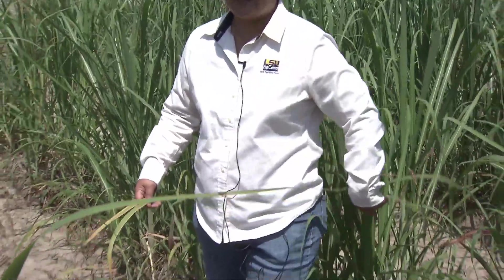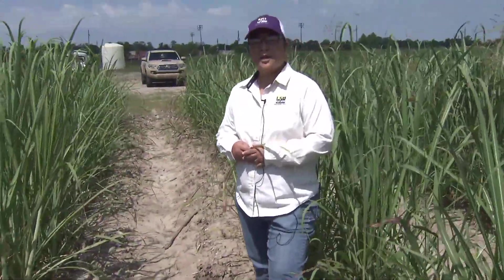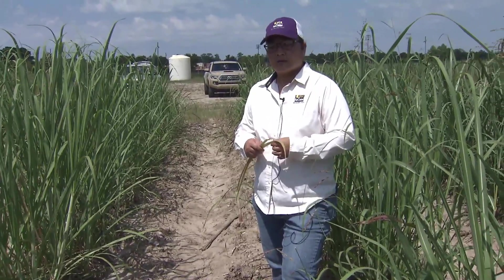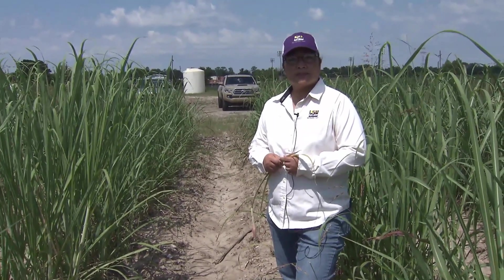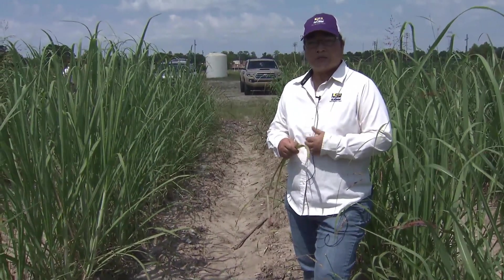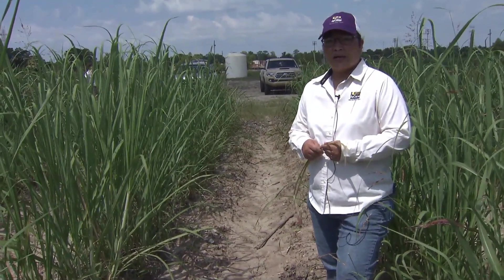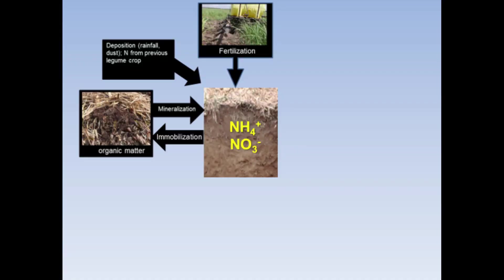I'm standing in front of a sugarcane field that we didn't apply nitrogen at all. Why nitrogen? We've been studying nitrogen for many years and still continuously working on it, because nitrogen is one of the most limiting nutrients in most crop production systems, except of course the legume system. At the same time, it is also very dynamic — we lose nitrogen in many pathways such as leaching, runoff, and even by gases through volatilization. Nitrogen cycle is very dynamic, which makes nitrogen one of the most difficult nutrients to manage.